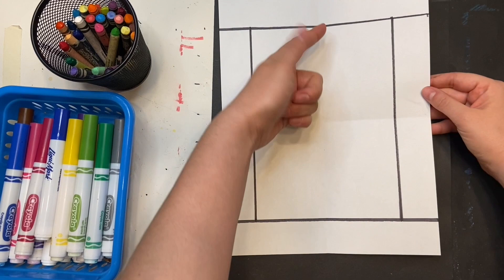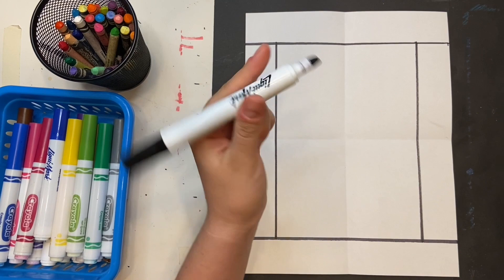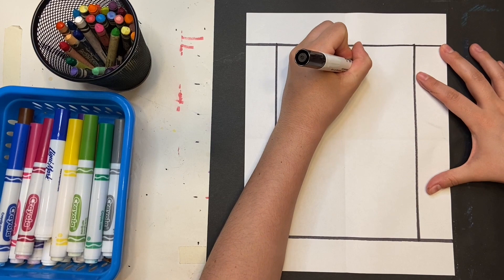You can see where the folds divide my paper. This is going to help me as I draw the outline of the silhouette. Follow along with me.